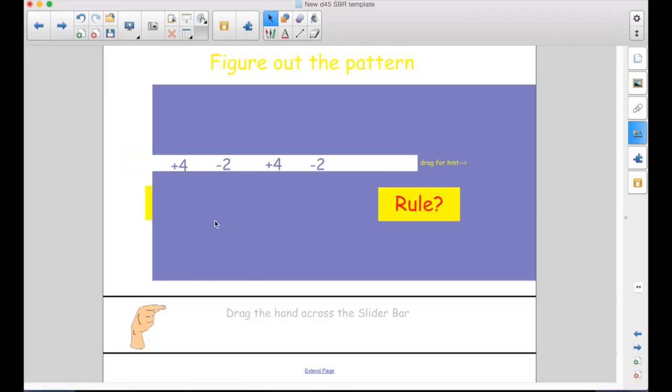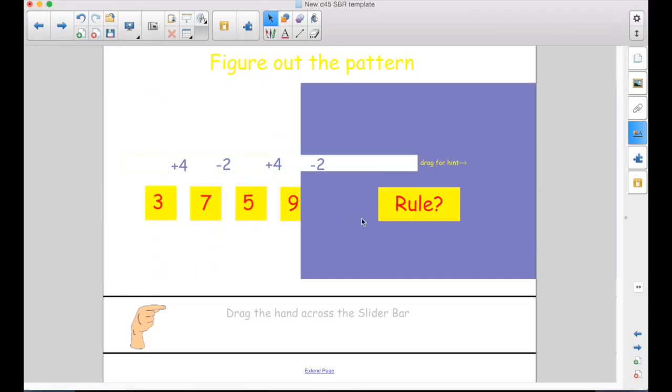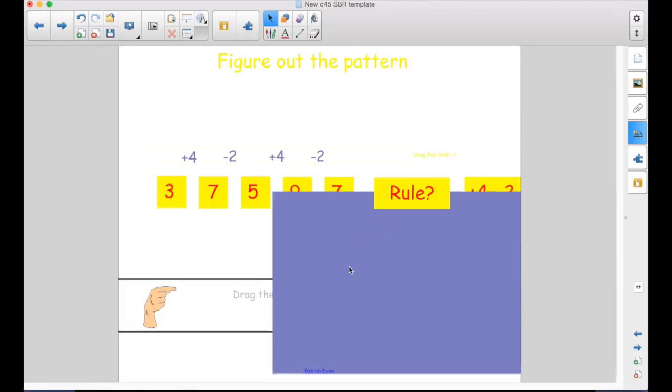Why is the purple going over the numbers but not covering up the one that says rule? It's all layers. These in the background are below the purple. This one is above it.